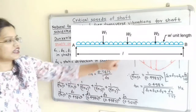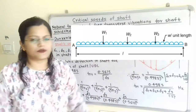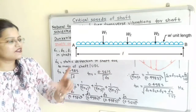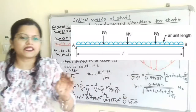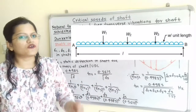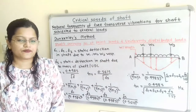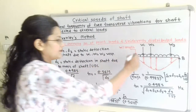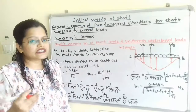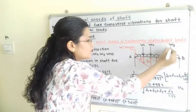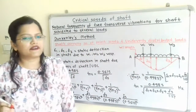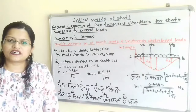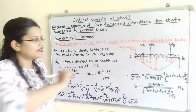If we observe the diagram, there are three point loads W1, W2, and W3, and there is a uniformly distributed load W per unit length. The length of the shaft between points A and B is mentioned in the question. Due to point load W1, the static deflection in the shaft is δ1; due to W2, it is δ2; due to W3, it is δ3; and due to the uniformly distributed load W per unit length, the static deflection at the midpoint of the shaft is δS.